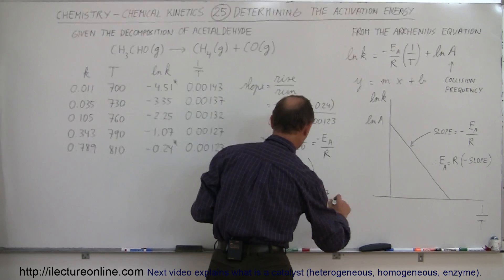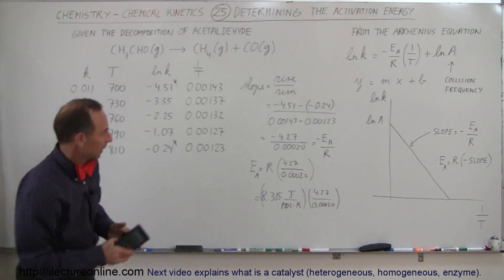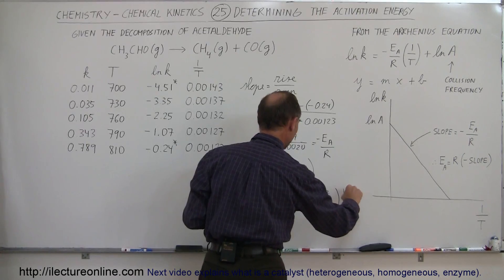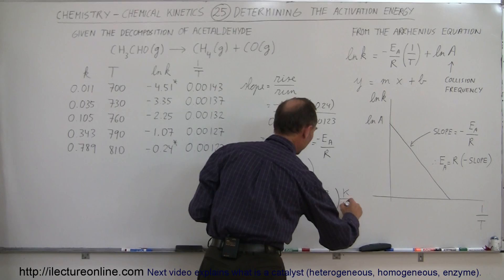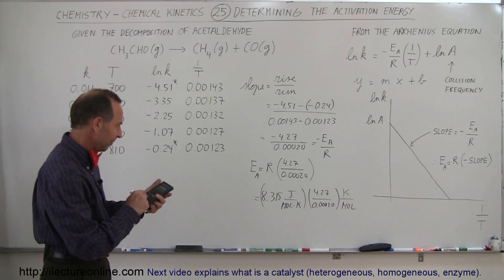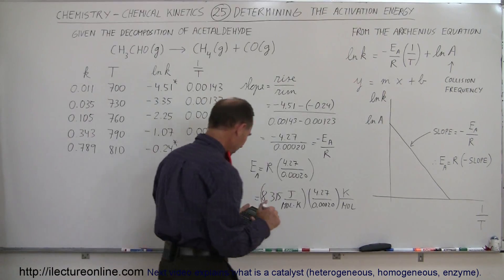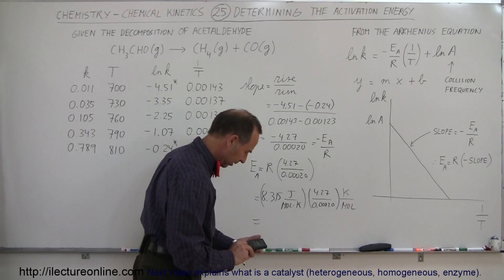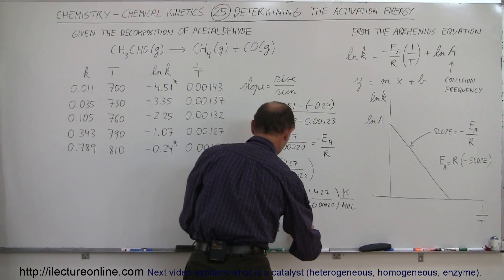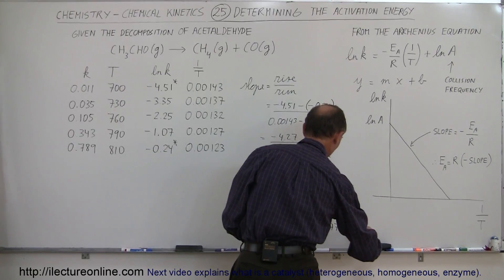So we compute 8.315 times 4.27 divided by 0.0002. The units work out: the kelvin cancels, leaving joules per mole. This gives us an activation energy of 177,525 joules per mole, or 177.5 kilojoules per mole.